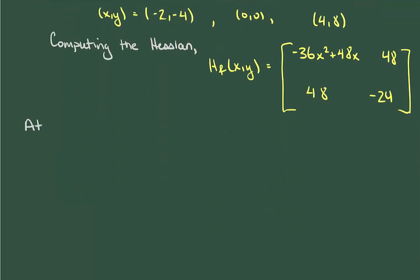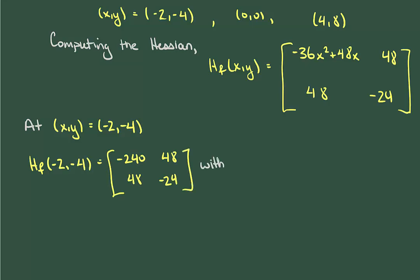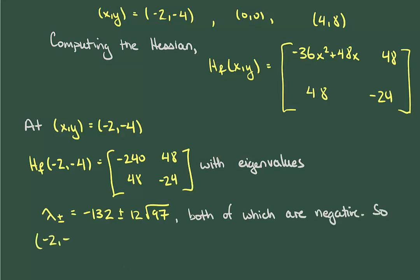We'll start then with the point (-2,-4), which gives us the following Hessian matrix. And here, again, I'm not going to go through the work necessary to find the eigenvalues, but we'll instead just write them down for you. Both of these turn out to be negative, telling us that (-2,-4) is a maximum.